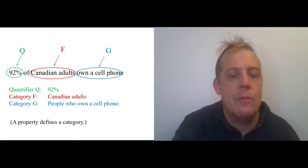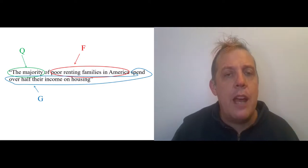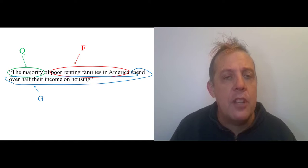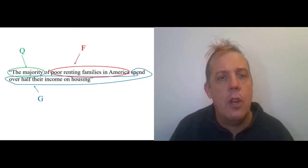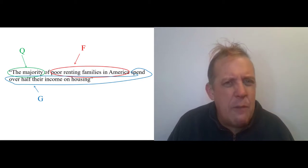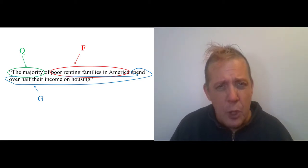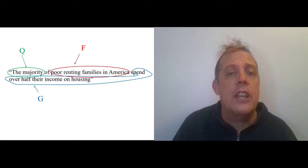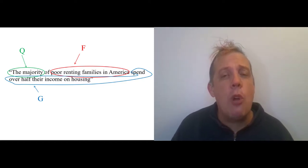Here's one from Matthew Desmond: the majority of poor renting families in America spend over half their income on housing. That's from page four. The quantifier is the majority, I guess that means at least 51%, greater than 50%. The category F is poor renting families in America, and the category G is people who spend over half their income on housing.